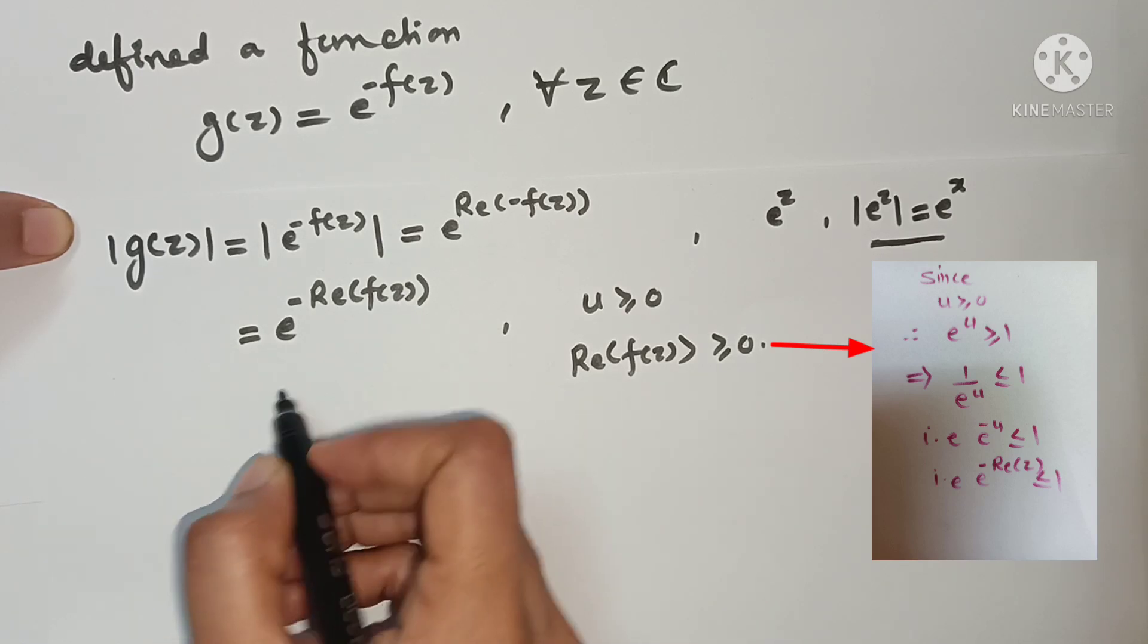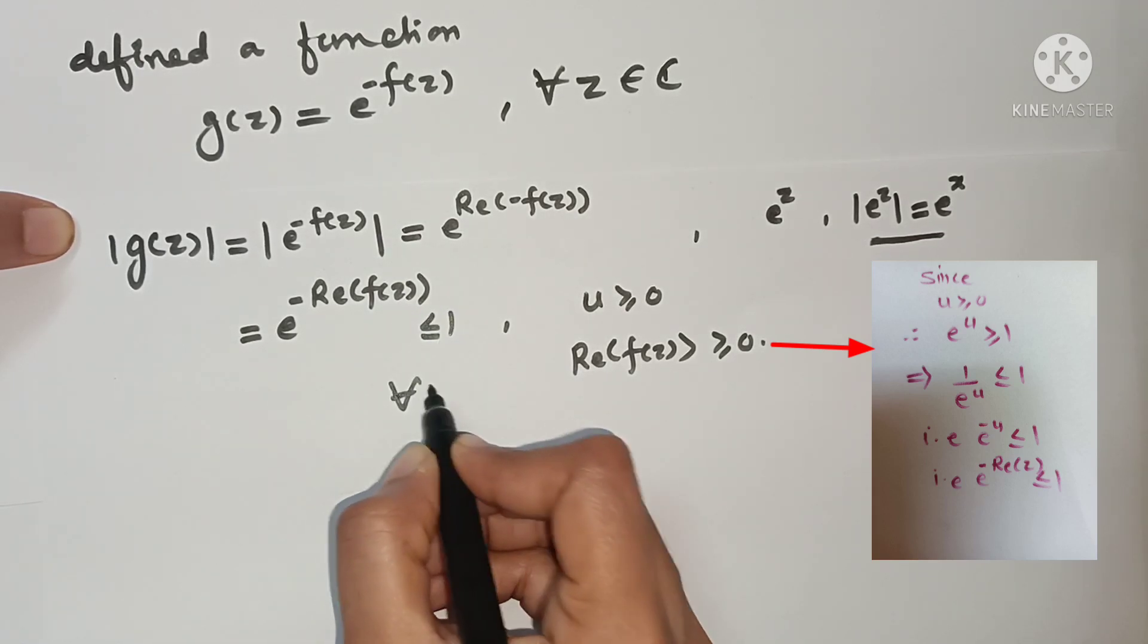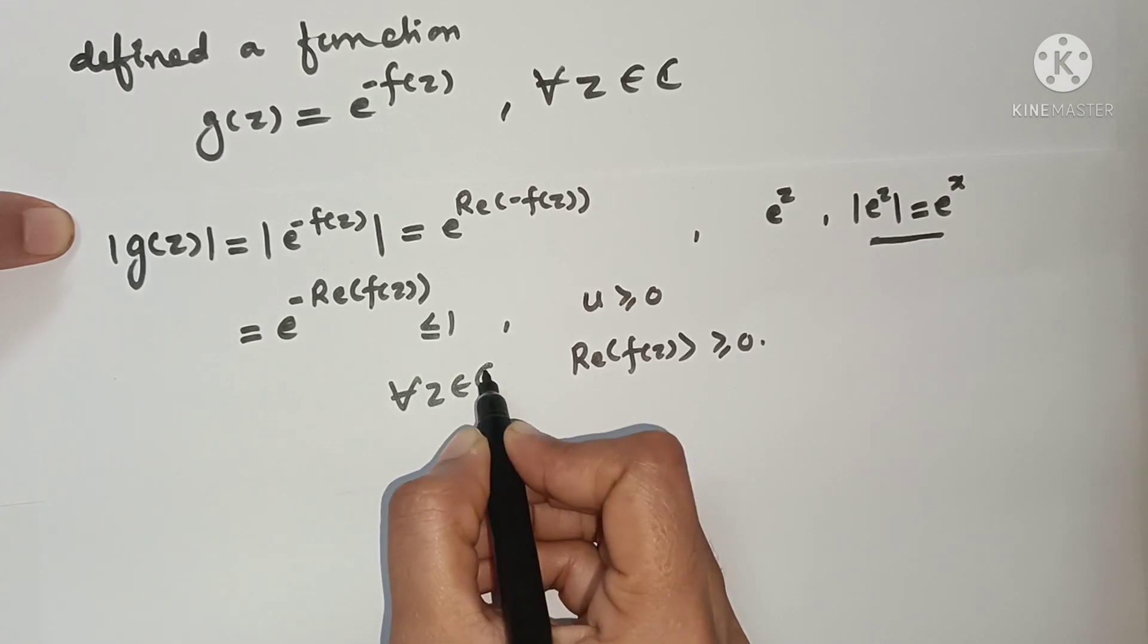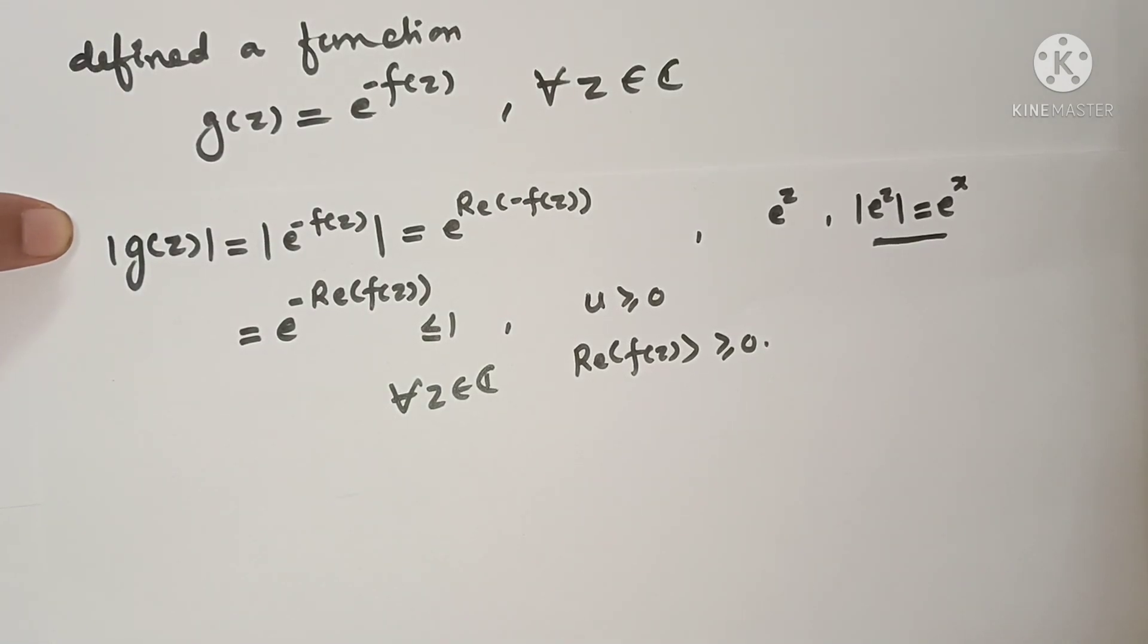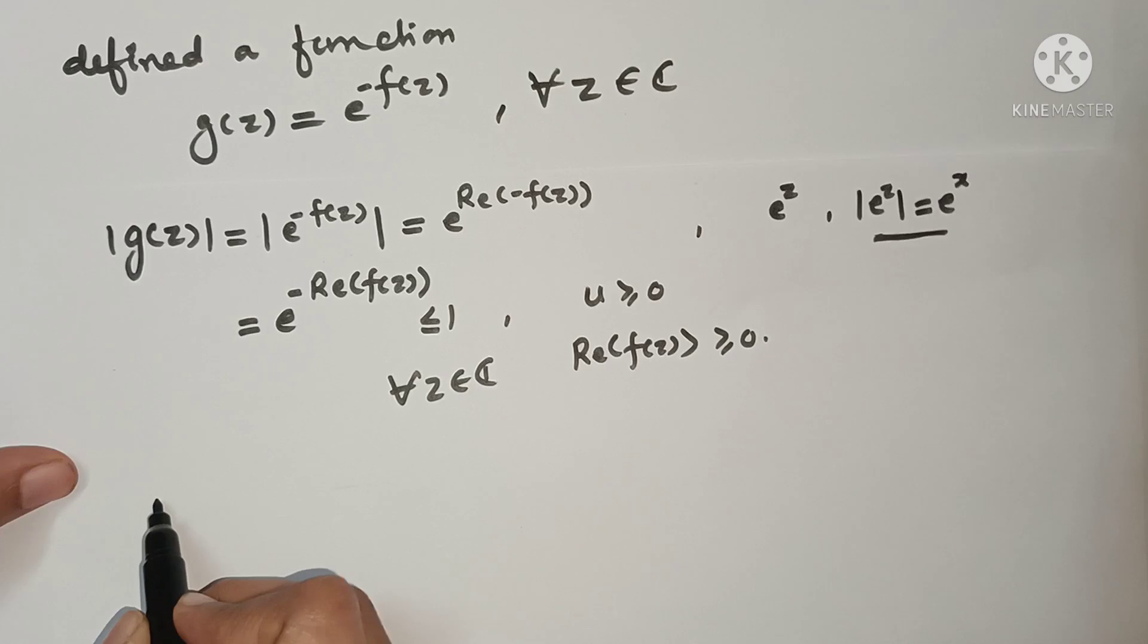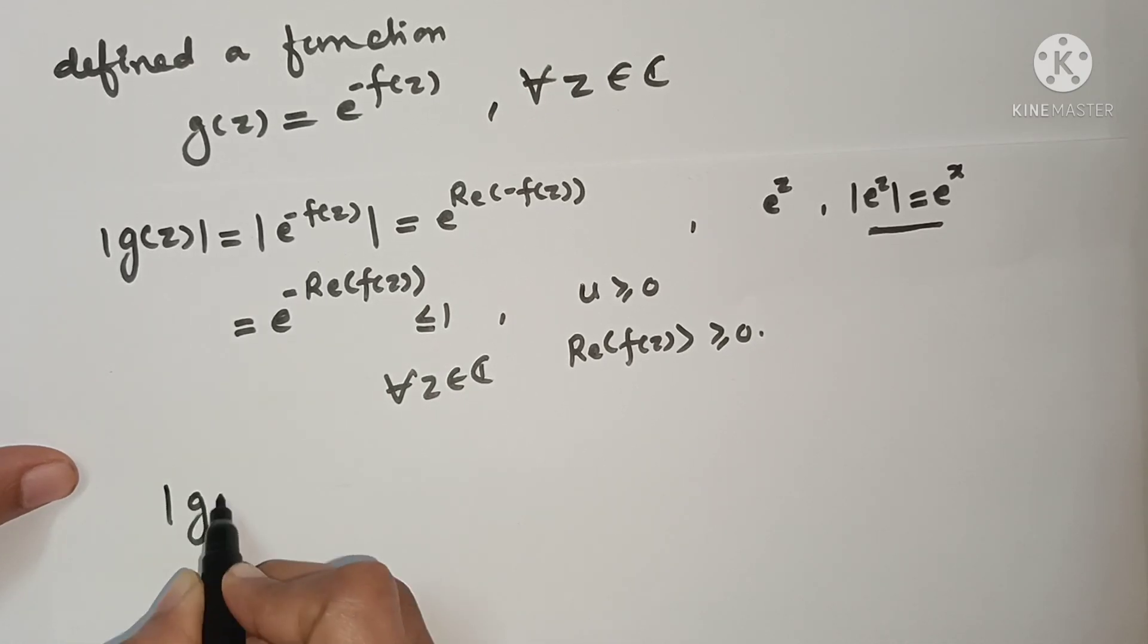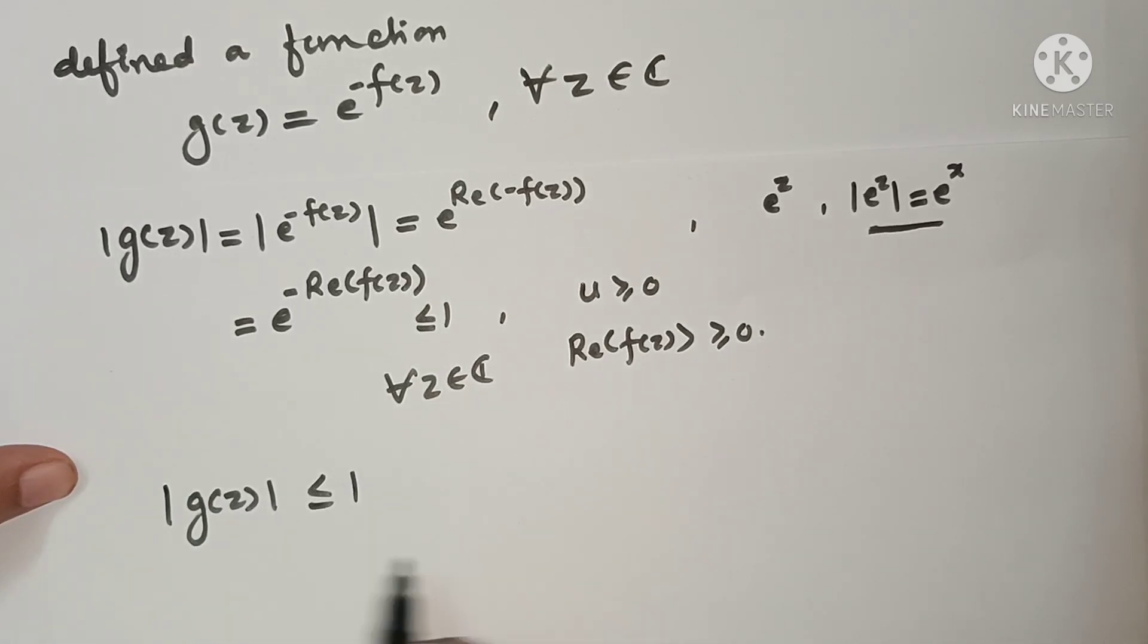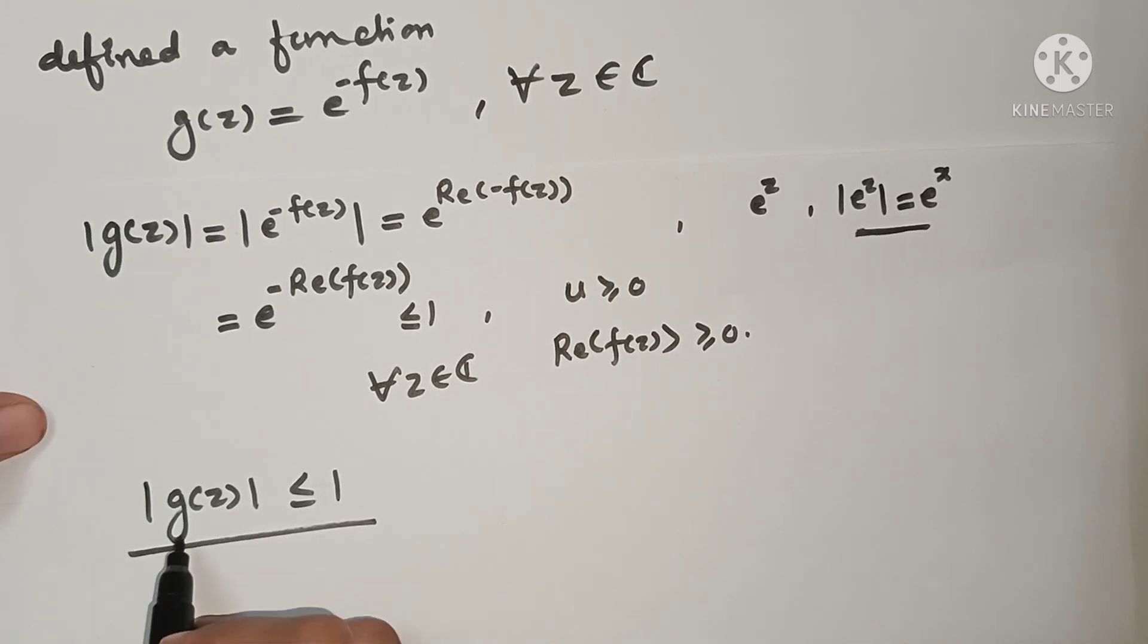For all Z belongs to complex set C. That means we get |G(z)| = e^(-Re(F(z))) = e^(-U) ≤ 1.